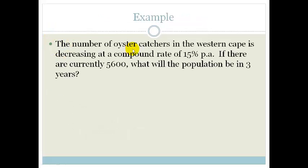The number of oyster catchers, that's a type of bird, in the Western Cape is decreasing at a compound rate of 15% per annum. That's quite scary. If there are currently 5,600 birds, what will the population be in 3 years?